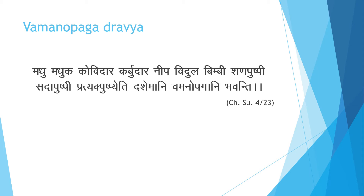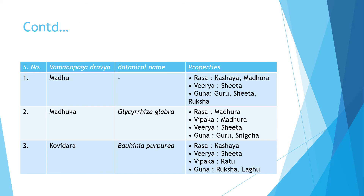We will now study all ten Vamanupak dravye in brief. First is madhu — its botanical name is Glycyrrhiza glabra, and it has properties of kashay madhur rasa, sheet virya and guru and snigdha guna, with madhur vipak. Kovidar is Bauhinia purpurea — it is kashay rasa, sheet virya, and kattu vipak, having ruksha and laghu guna.